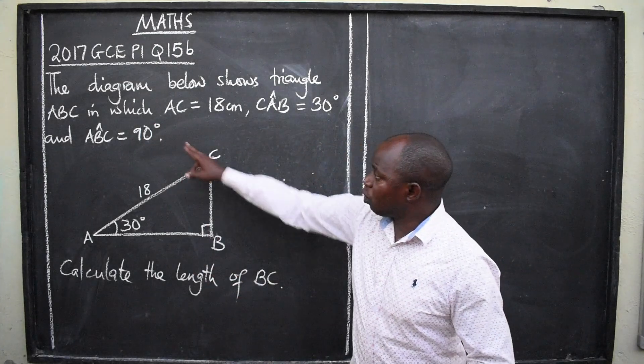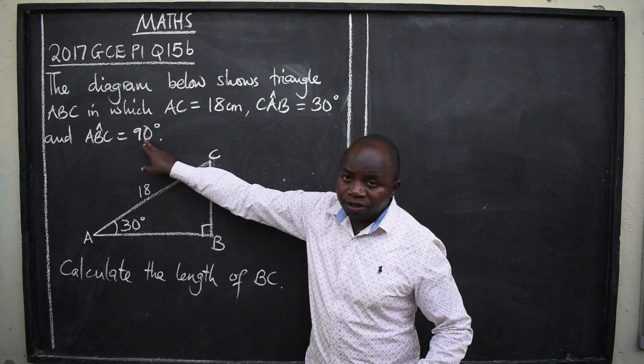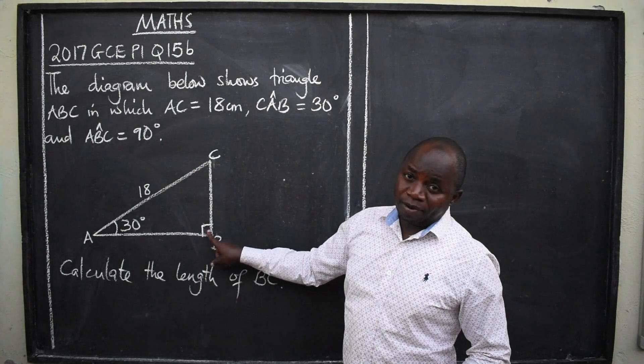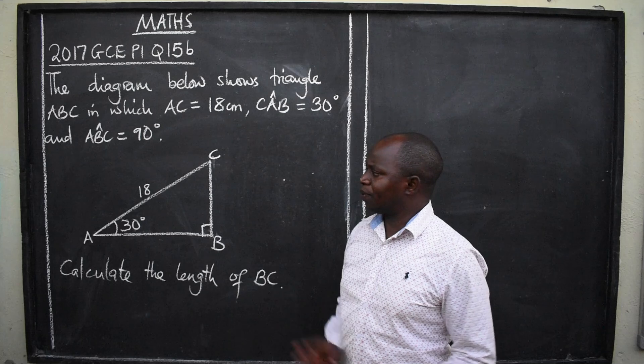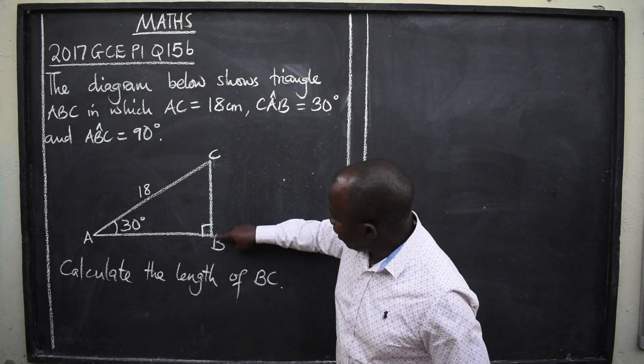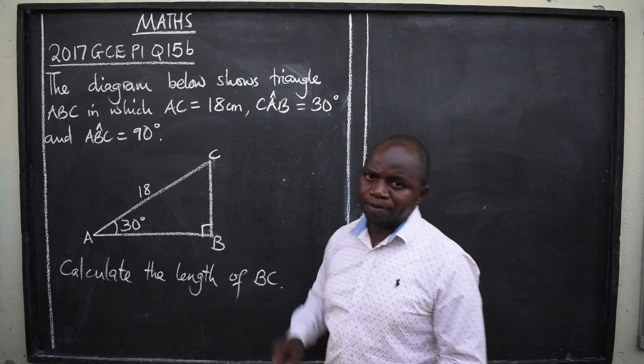It is only a 90 degree angle that has got this symbol. I hope we are together in that one. So calculate the length of BC. B to C. What is the length of this BC?